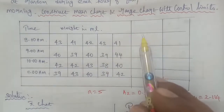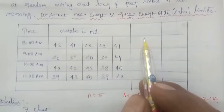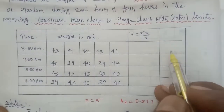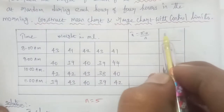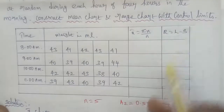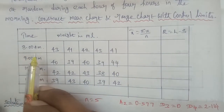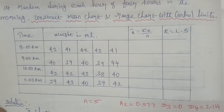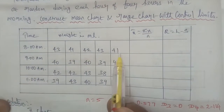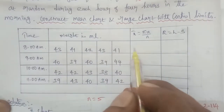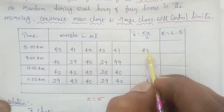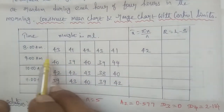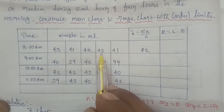The formula for x-bar is: x-bar = summation of x divided by n. The range formula is: R = L minus S (largest minus smallest). For 8am, we have 5 data values. The sum is 210, so x-bar = 210 divided by 5 = 42. The range is 43 minus 41 = 2.